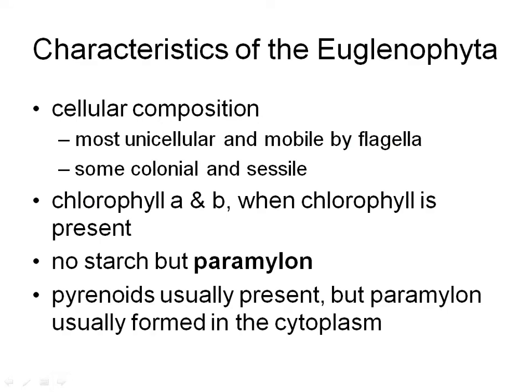These organisms are mostly unicellular. There is one example that's colonial, but it's colonial in a way that is really kind of unicellular also. They are all mobile with flagella at some point in their life cycle. The colonial ones are not mobile for most of their life cycle, but at some point very early on they have flagella.